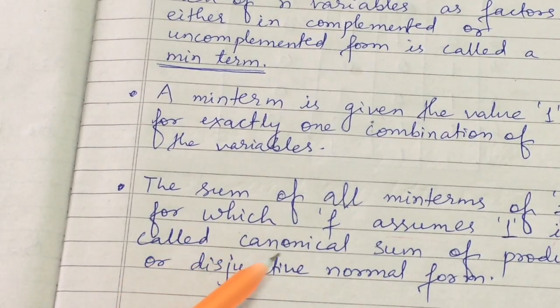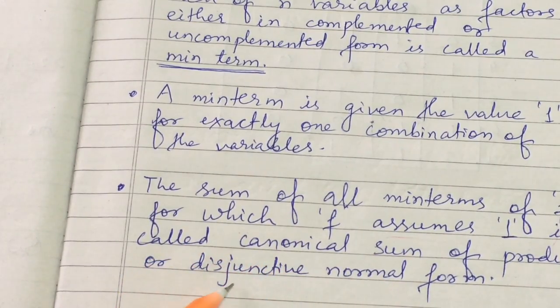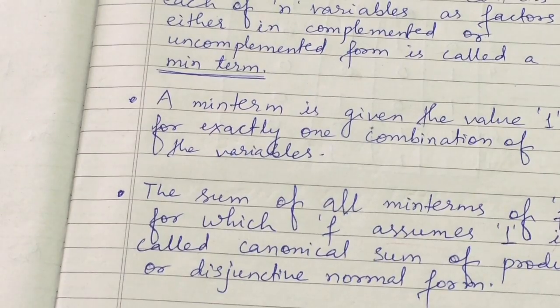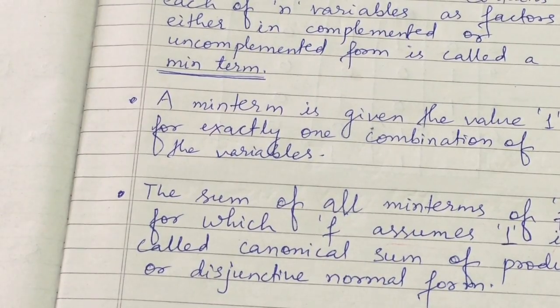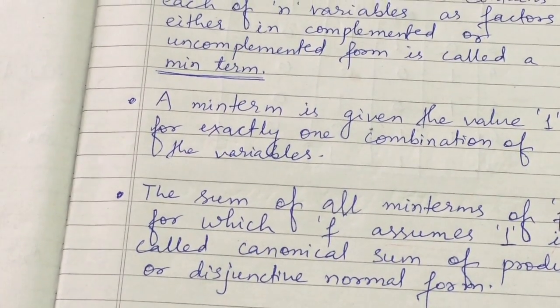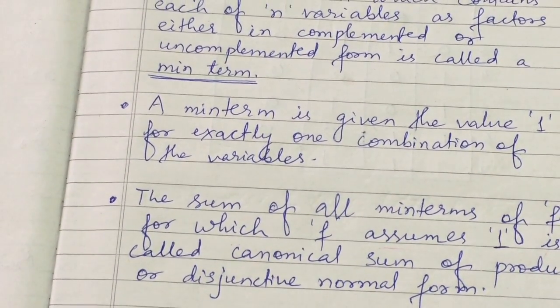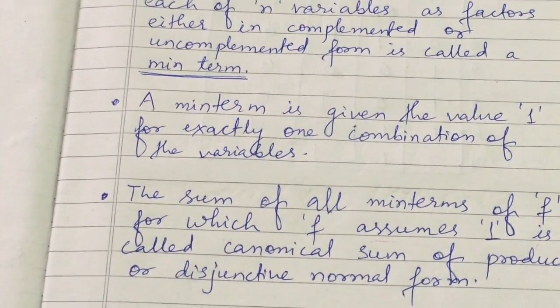The sum of all min terms of f for which f assumes the value 1 is called the canonical sum of products, also known as disjunctive normal form.